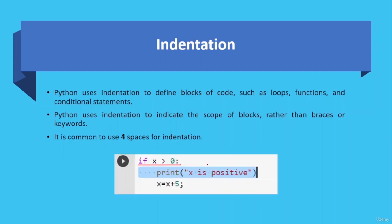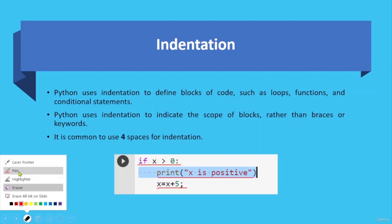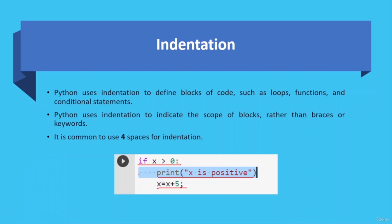Here you can see the example — after the if statement you define the code block that will execute when the condition is true. There are two lines of code in the if code block, and you can note the same number of spaces for both lines. Since it's common to use four spaces for indentation, here you can see four spaces before each line of code in the if code block.